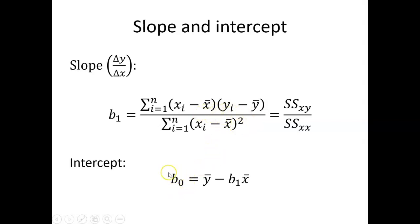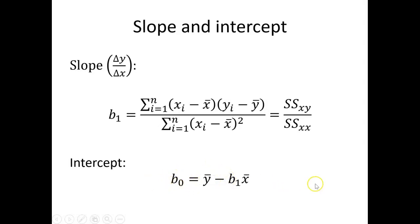The intercept estimate, b0, is going to be equal to the mean of y minus the slope estimate times the mean of x. So we position the regression line at the mean of the two values, and then using the estimated slope, we find the vertical intercept.